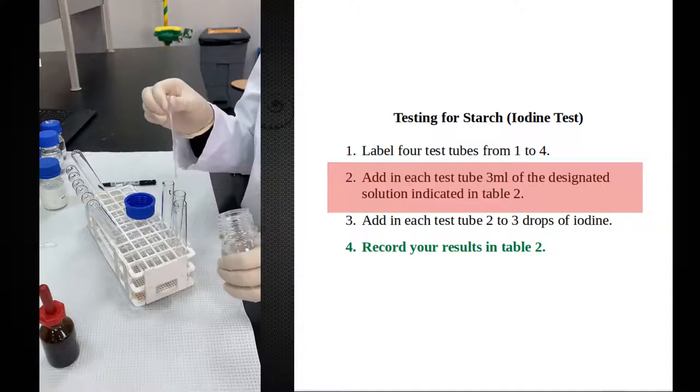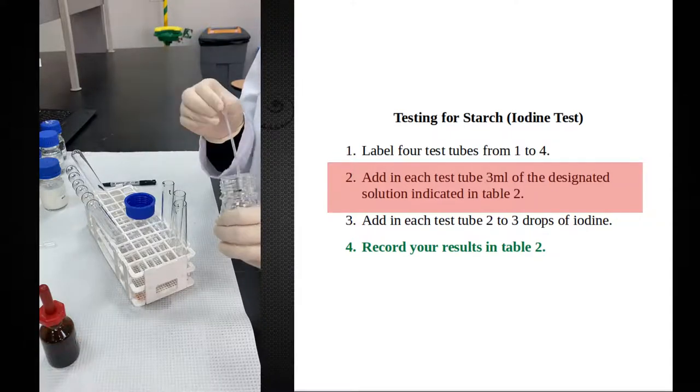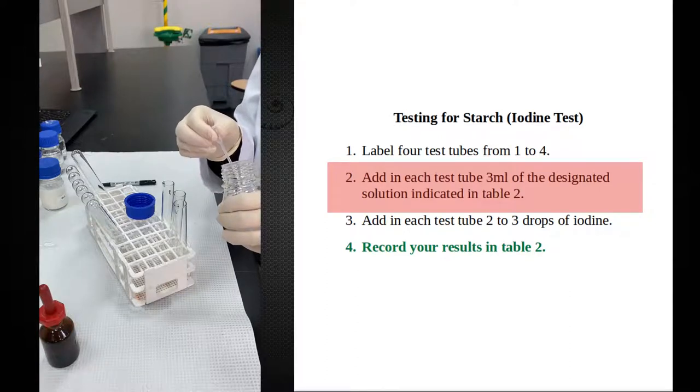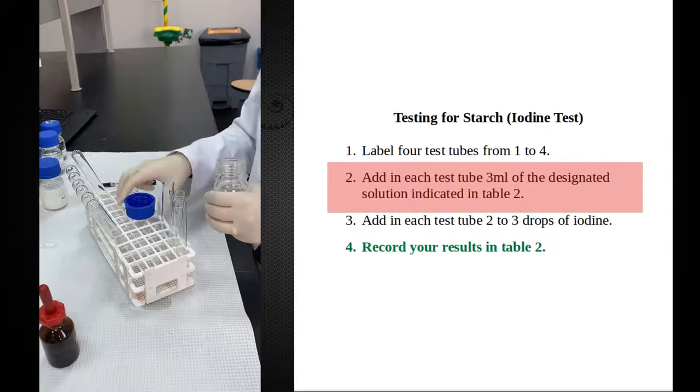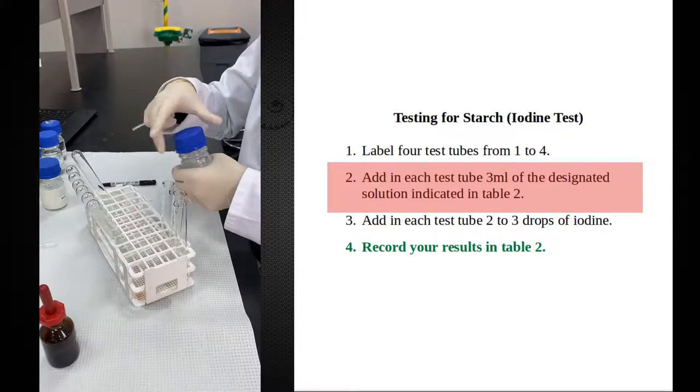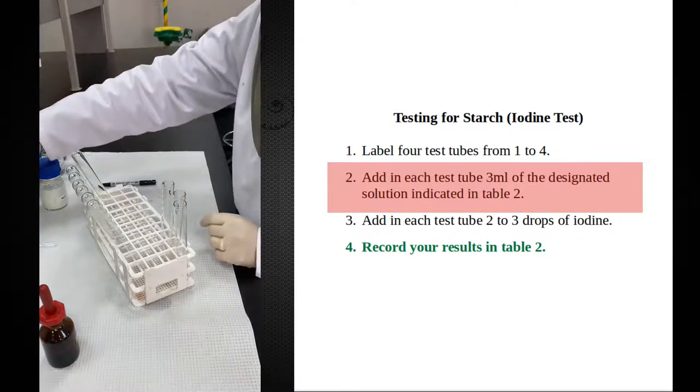As discussed for the lecture, iodine gives me dark blue color or dark purple color for a positive result for the existence of starch, and yellow color, which is the original color of iodine in case of negative results.